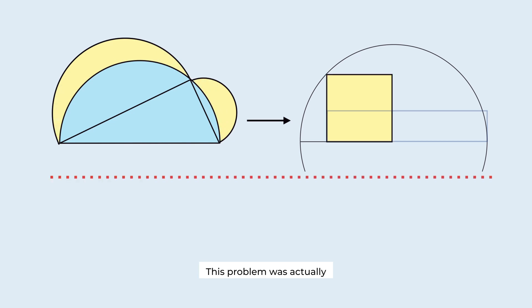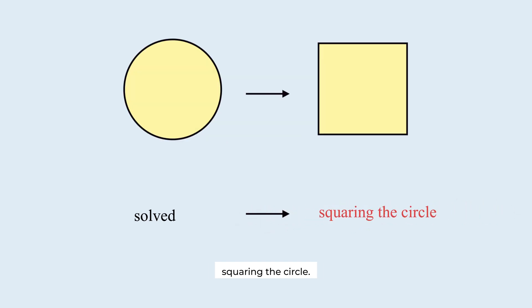This problem was actually one of the most famous in the history of mathematics. It was about replacing part of a circle with a square, essentially turning a curve into straight lines. Once this was solved, mathematicians turned their attention to a bigger challenge, squaring the circle.